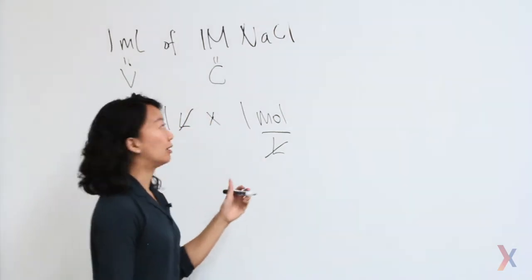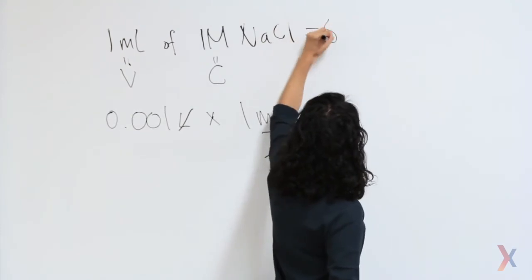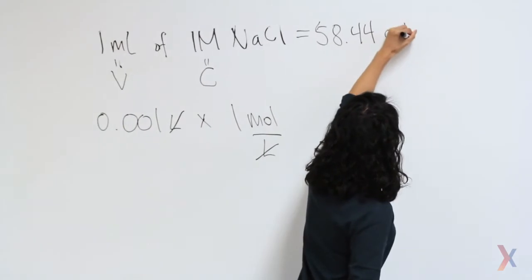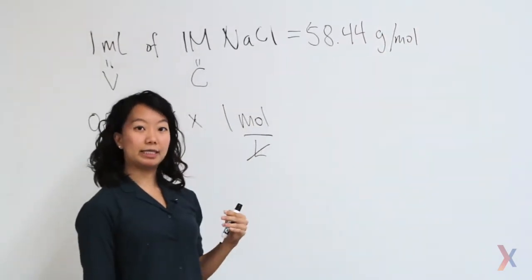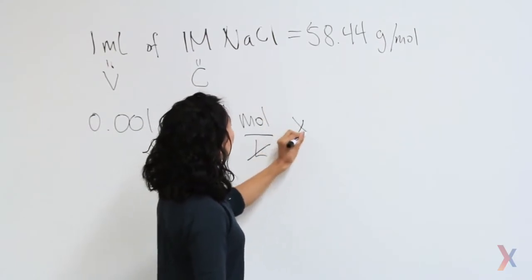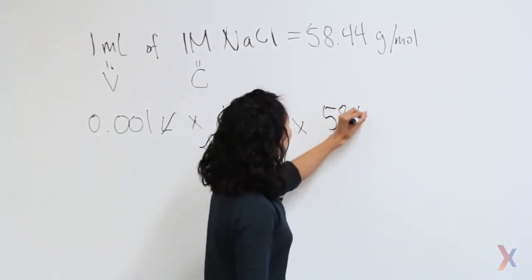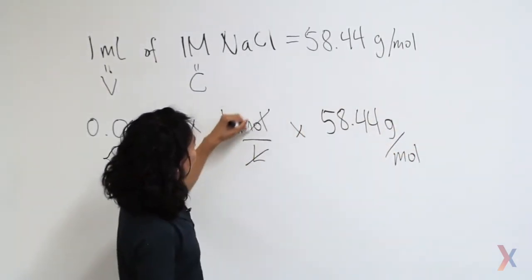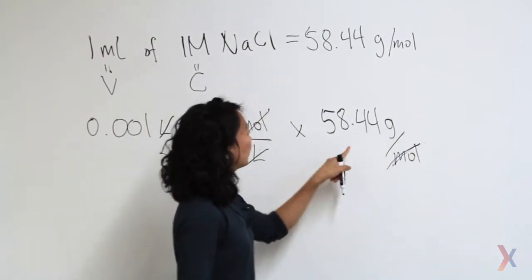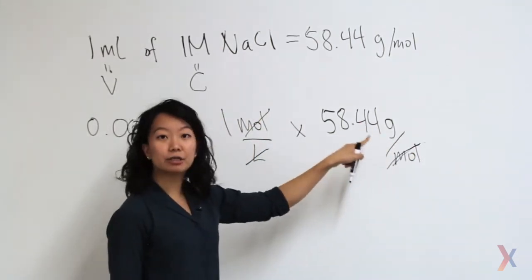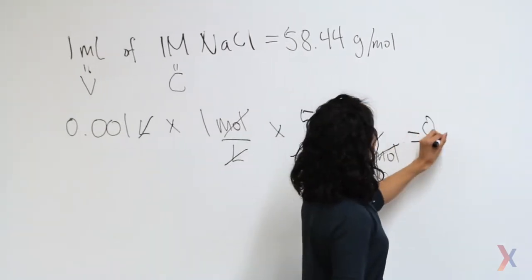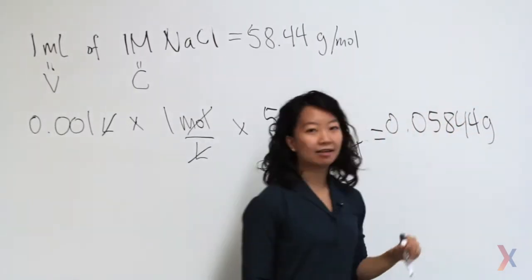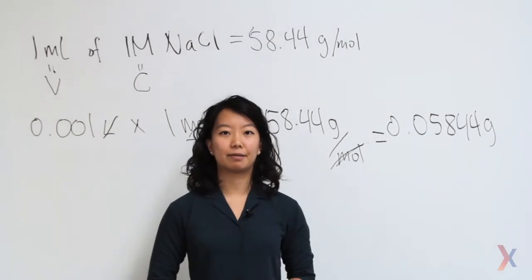This is where I take the information that sodium chloride has a molecular mass of 58.44 grams per mole. I can then multiply this in — 58.44 grams per mole — and again my units from the top and bottom cancel out, and I'm left with a unit of just grams, which gives me 0.05844 grams as the final amount of sodium chloride to measure out in order to make my solution.